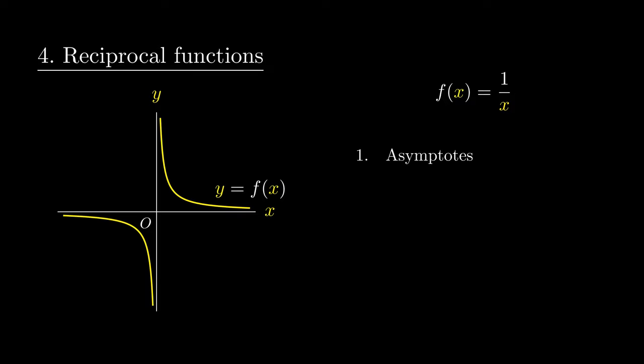This function comes into play when we talk about how the variables x and y are inversely proportional to each other, and also features in the ideal gas law in physics. In calculus, the derivative of the logarithm function is 1 over x, but more on the logarithm function later on.